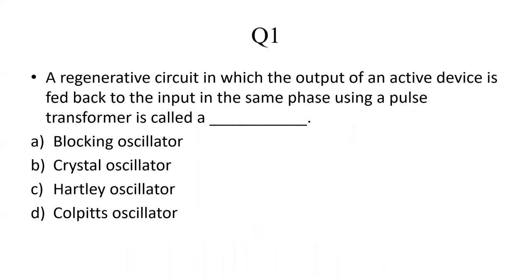The first question is related to blocking oscillator. A regenerative circuit in which the output of an active device is fed back to the input in the same phase using a pulse transformer is called a blocking oscillator. We know that the pulse transformer is used in a blocking oscillator. So the correct answer is Option A: blocking oscillator.